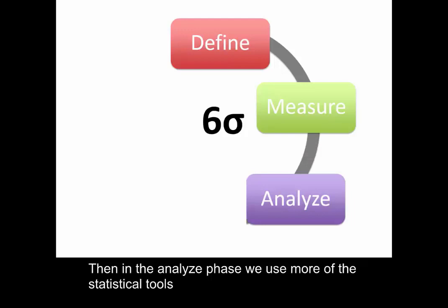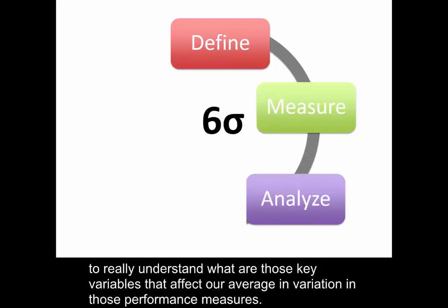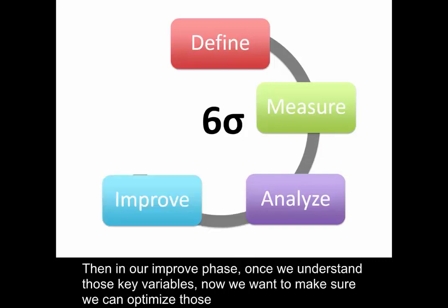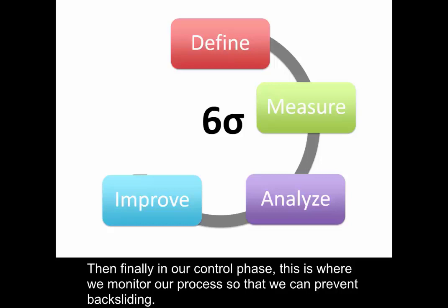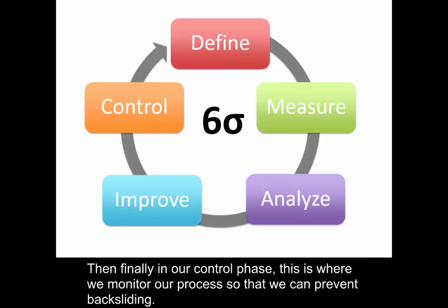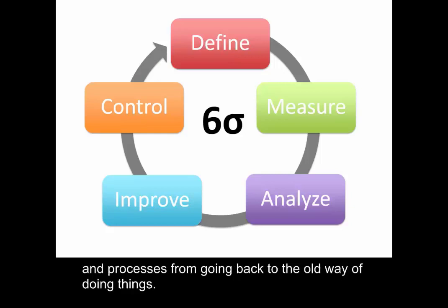Then in the Analyze phase, we use more of the statistical tools to really understand what are those key variables that affect our average and variation in those performance measures. In our Improve phase, once we understand those key variables, we want to optimize those variables and determine those key settings so that we can achieve our performance measures. Finally, in our Control phase, this is where we monitor our process so that we can prevent backsliding and processes from going back to the old way of doing things.